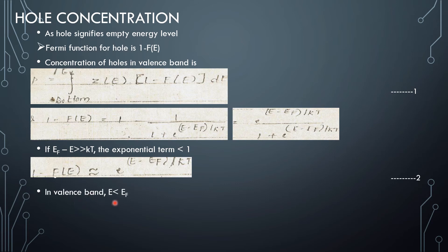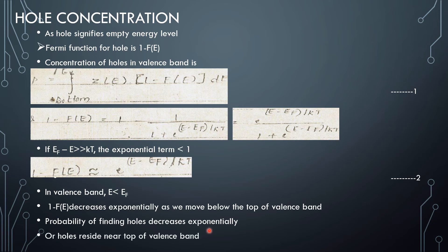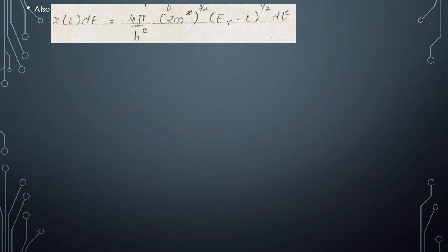In the valence band, E is less than EF, and 1 - F(E) decreases exponentially as we move below the top of the valence band toward the bottom. The probability of finding holes decreases exponentially, meaning holes reside near the top of the valence band. Z(E) dE = (4π/h³) · (2m*)^(3/2) · (EV - E)^(1/2) dE, where EV is the top of the valence band — Equation 3, and m* is the effective mass of the hole.